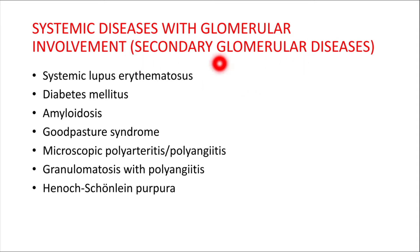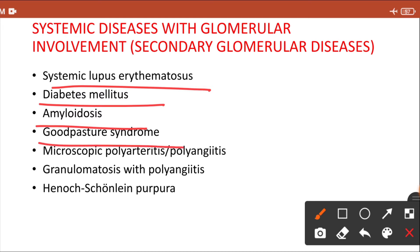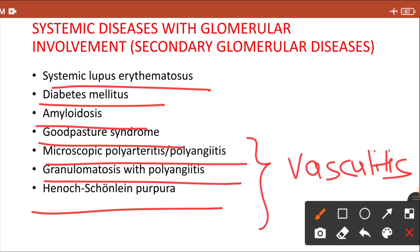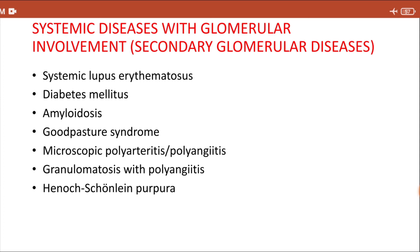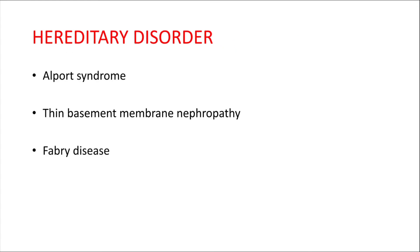The second category is secondary glomerular disease, where glomerular involvement is secondary to systemic diseases including systemic lupus erythematosus, diabetes mellitus, amyloidosis, Goodpasture syndrome (anti-GBM nephritis), microscopic polyangiitis, granulomatosis with polyangiitis, and Henoch-Schönlein purpura — all examples of vasculitis. A third category is hereditary disorders, including Alport syndrome, thin basement membrane nephropathy, and Fabry disease.